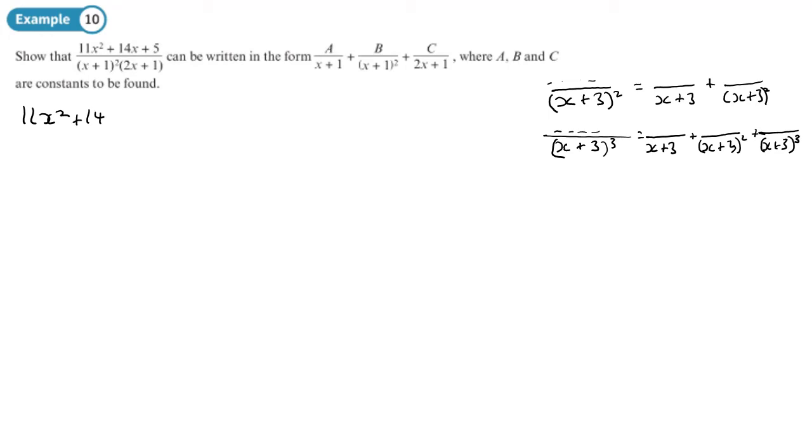11x squared plus 14x plus 5 over x plus 1 squared times 2x plus 1. And we want to write it in the form a over x plus 1, which doesn't appear in the original question but it's a factor of x plus 1 squared, plus b over x plus 1 squared plus c over 2x plus 1.